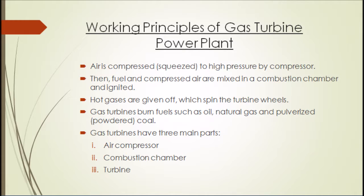The combustion produces a high-temperature, high-pressure gas stream that enters and expands through the turbine section. The turbine is an intricate array of alternate stationary and rotating aerofoil section blades. As hot combustion gas expands through the turbine, it spins the rotating blades. The rotating blades perform a dual function: they drive the compressor to draw more pressurized air into the combustion section and spin a generator to produce electricity.